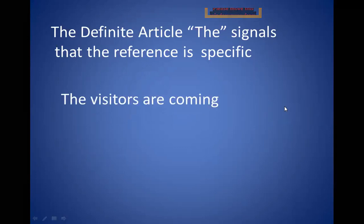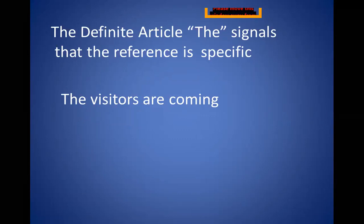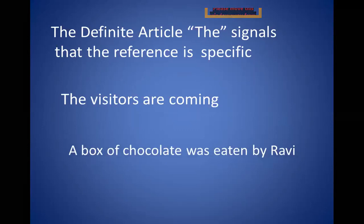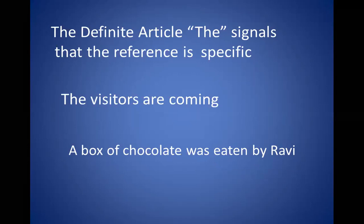For example: 'The visitors are coming' — here the person who is going to attend knows that someone is coming, so THE is used before 'visitors.' Someone might also say 'Visitors are coming,' but when THE is used, we are specifying that the listener's family is going to have visitors at their place. Similarly, 'The box of chocolate was eaten by Ravi' refers to something quite familiar to both speaker and listener.